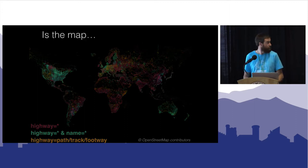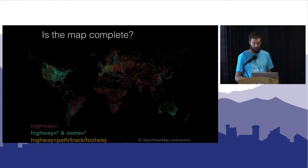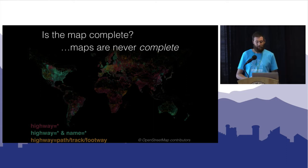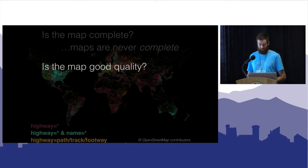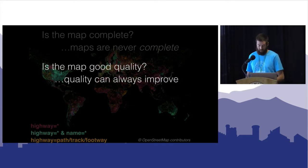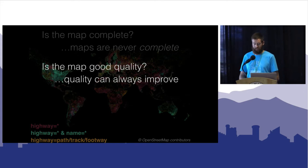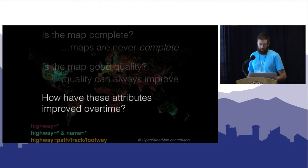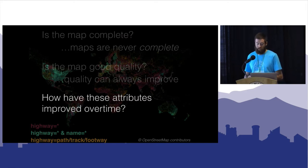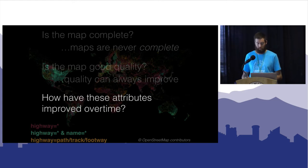Is this map complete? The mapper in us all knows this is a pretty loaded, problematic term that requires much further definition. How about good quality — is the map of good quality? Even more interpretations arise, and completeness and quality can always improve. So I propose a different question, a kind of reframing: how has the map grown and evolved over time? Completeness and quality are contained somewhere inside this complex relationship.